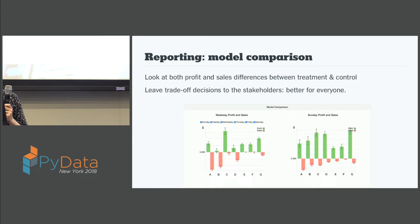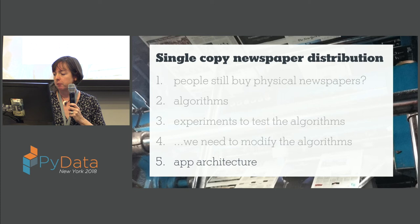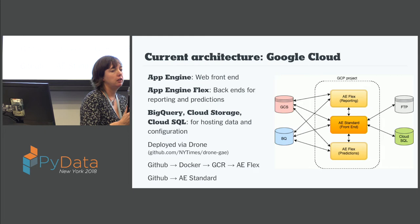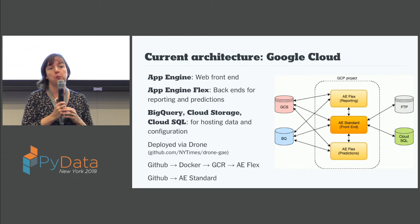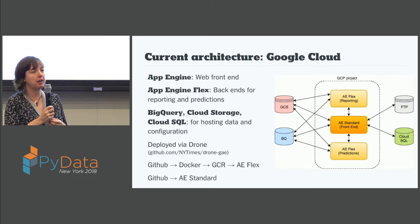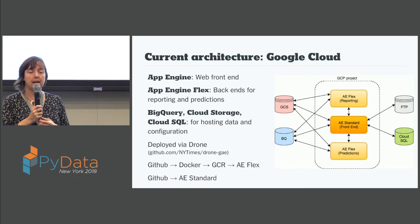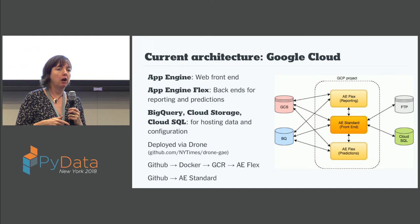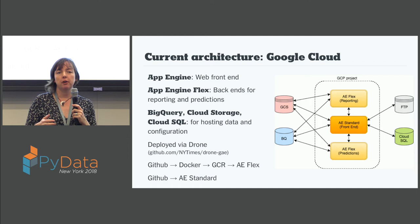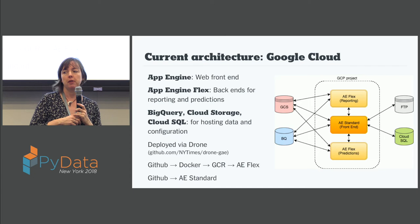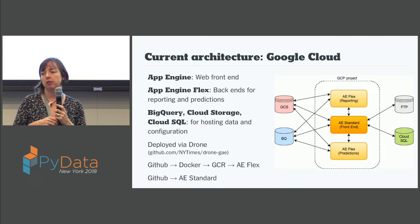Finally, I wanted to go over the app architecture. A couple of years ago the New York Times made a significant effort to move over to the Google Cloud Platform, which has been wonderful, and as part of this process we decided to re-platform this project onto Google Cloud as well — using mainly App Engine and App Engine Flex. There are a few different components: the web UI is run on App Engine Standard, while the reporting and predictions calculations are all run on App Engine Flex, because at least at the time you couldn't run things like Pandas and SciPy on App Engine Standard and needed custom containers.